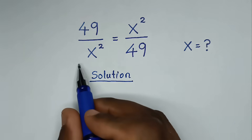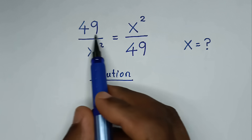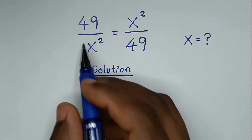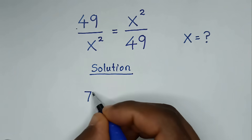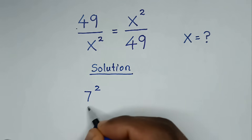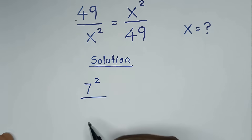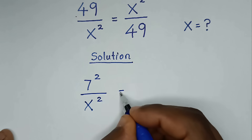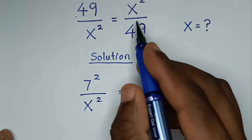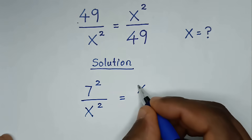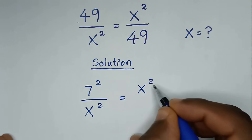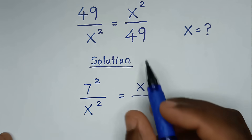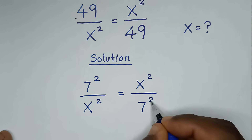From our problem here, 49 is the same as 7 squared. So 49 over x squared is equal to x squared over 49, which is 7 squared.